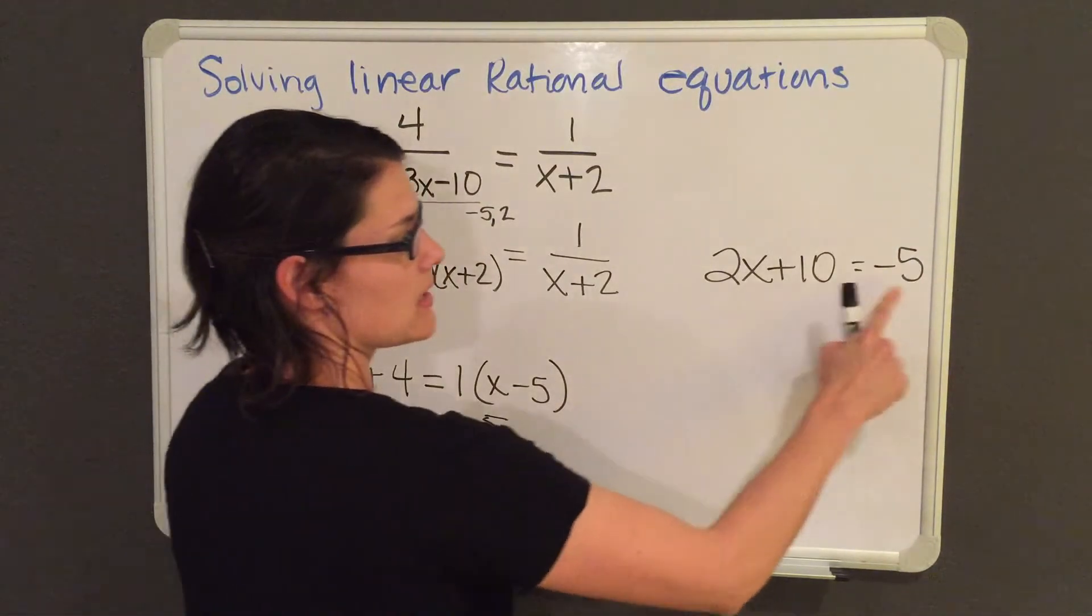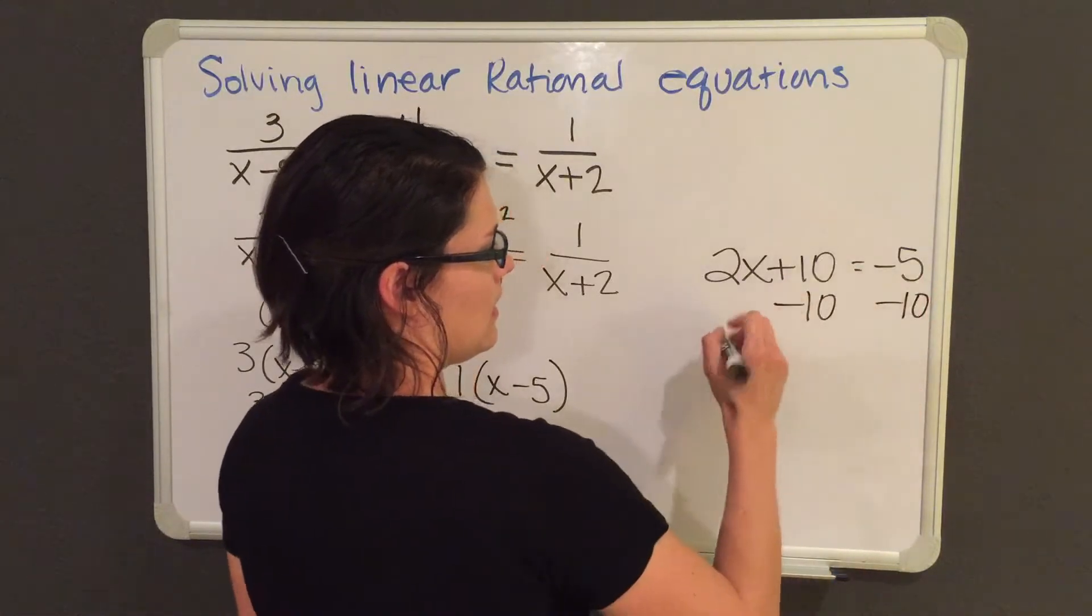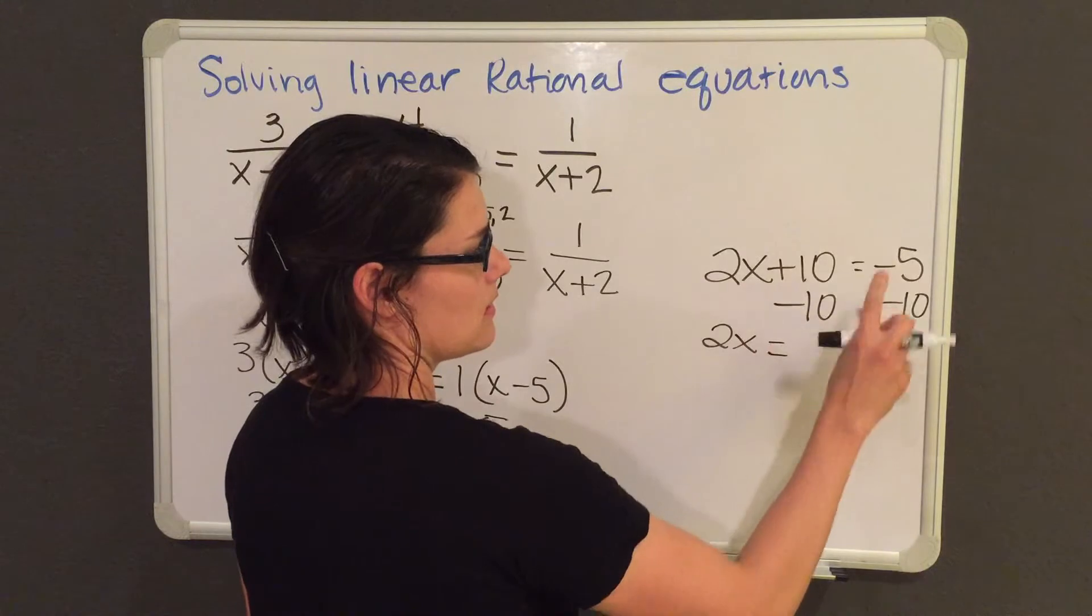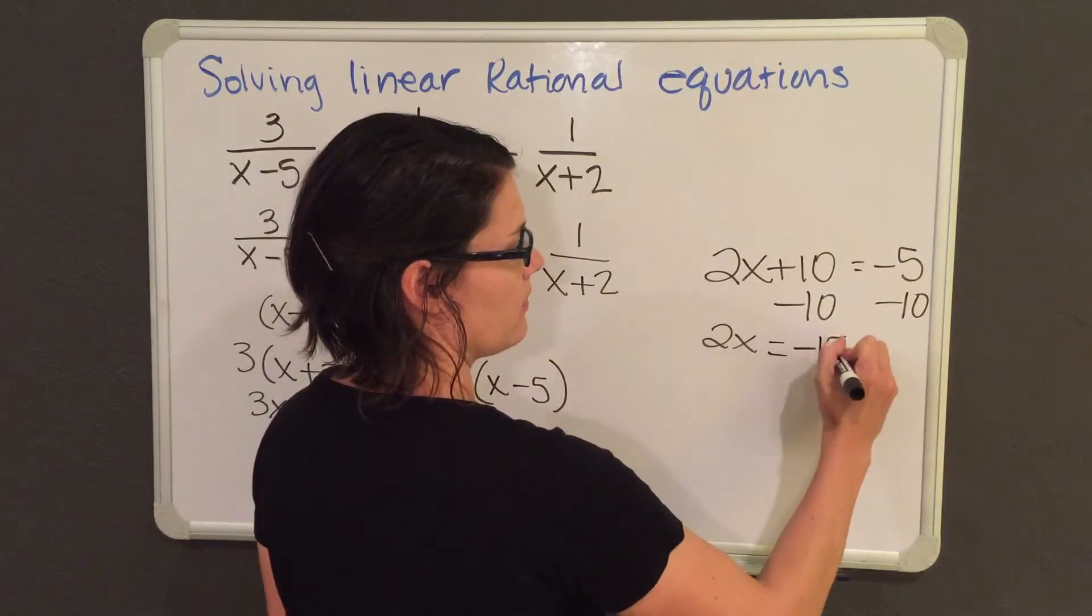Now I'm going to subtract 10 from both sides. On this side I'm left with 2x and the 10's cancel out. And then this equals to negative 5 minus 10, which is negative 15.